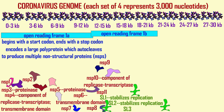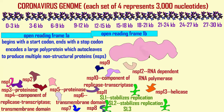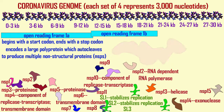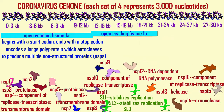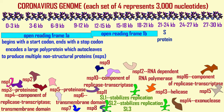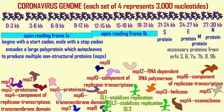In the final third of the coronavirus genome, there can be additional open reading frames which code for proteins other than the S, E, M, and N proteins. These are accessory proteins made from open reading frames 3, 6, 7A, 7B, 8, and 9B.